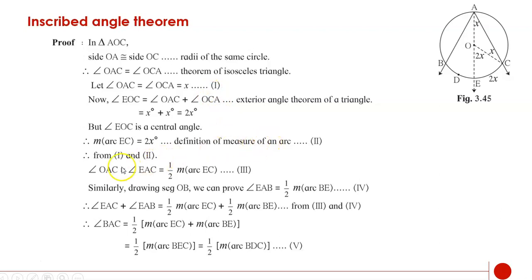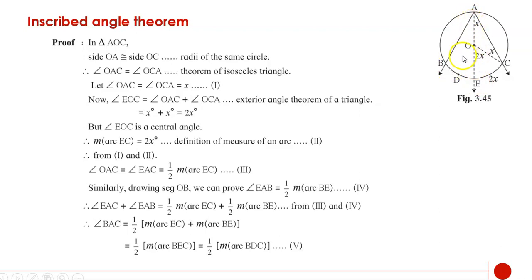From statements 1 and 2: angle OAC, which is the same as angle EAC, equals half of measure arc EC. This is statement 3. Similarly, if we join OB, we can prove that angle EAB equals half of measure arc BE. This is statement 4.